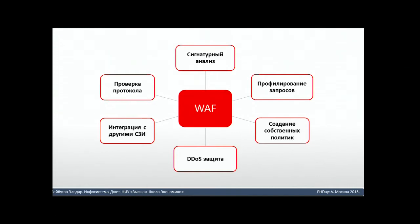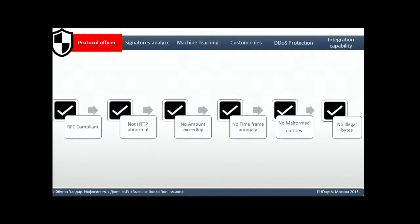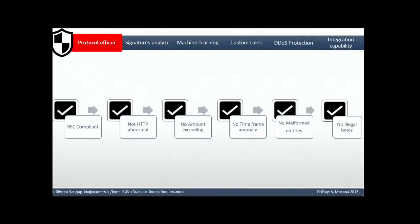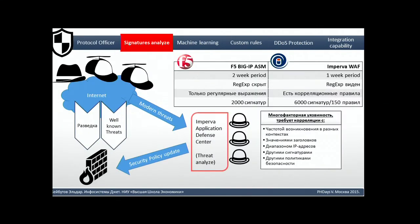Some of them are simple, like protocol checks, and some others are more complex, like machine learning. It starts from very basic things like protocol verification. It serves as a limiting factor because it narrows the area for the intruder — like RFC checks. Or it limits the number of parameters and the length of parameters so that all requests look legal. It also checks time parameters and finally looks for illegal bytes.